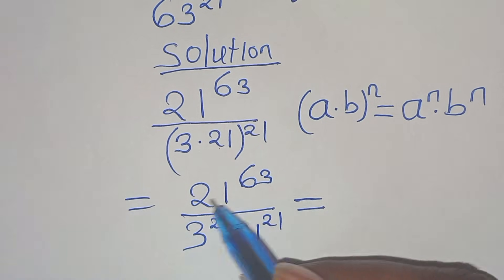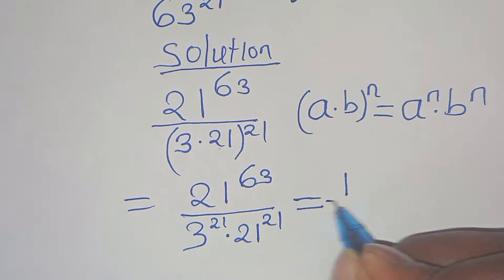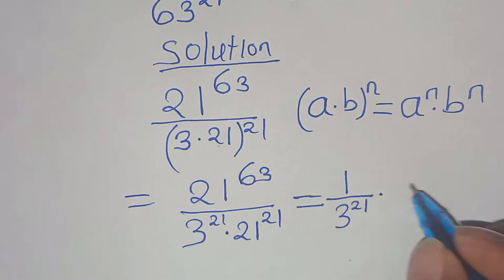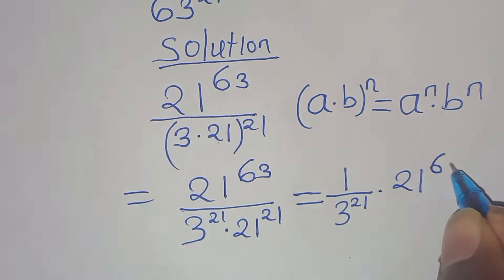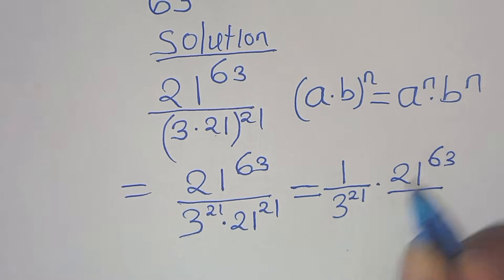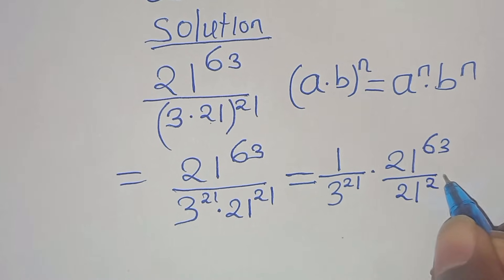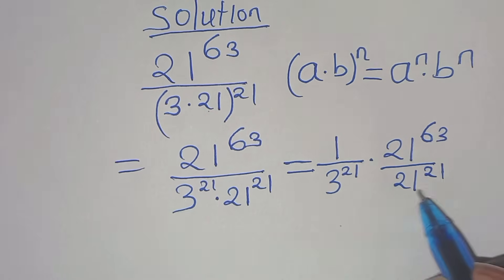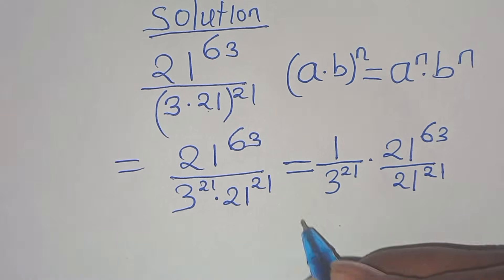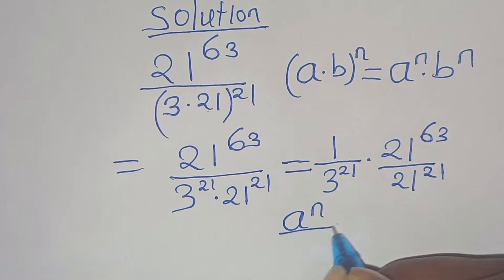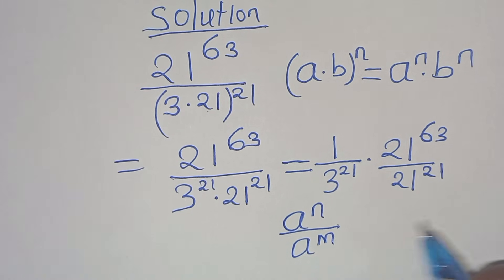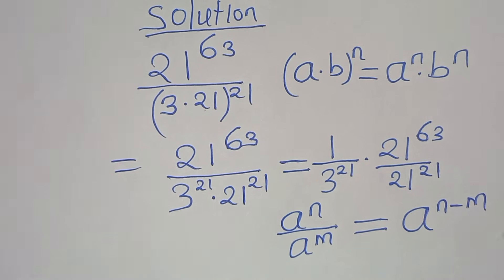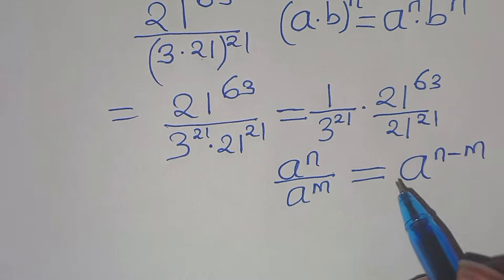This is equal to 1 over 3 to the power of 21, multiplied by 21 raised to the power of c×3 divided by 21 raised to the power of 21. We have that 21 to the power of c×3 divided by 21 to the power of 21 is in the form of a to the power of n divided by a to the power of m, and this can be expressed as a to the power of n minus m.